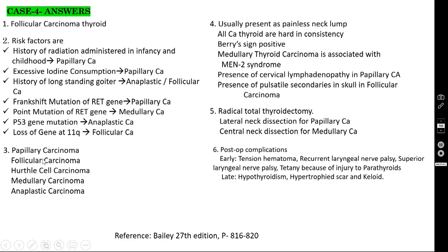The five types of thyroid carcinoma are: papillary carcinoma, follicular carcinoma, Hurthle cell carcinoma, medullary carcinoma, and anaplastic carcinoma. Among these, anaplastic has the worst prognosis. Follicular carcinoma cannot be differentiated from adenoma by FNAC alone — frozen section biopsy is required. Hurthle cell carcinoma is a variant of follicular carcinoma. Medullary carcinoma is associated with MEN2 syndrome and runs in families — all family members should be tested.